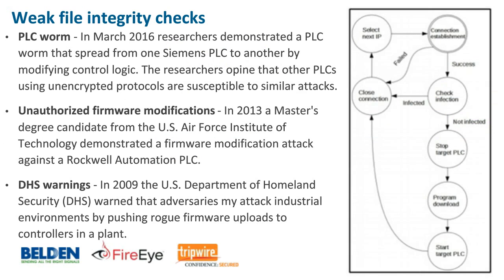Number four: weak file integrity checks. When we talk about integrity checks, we're talking about some cryptographic verification that software comes from an authorized source. A vendor will normally generate their own certificate or rely on a certificate authority to allow the client to verify the source of the software. A lack of software signing allows attackers to mislead users into installing software that did not originate from the vendor. It also allows attackers to replace legitimate files with malicious ones.